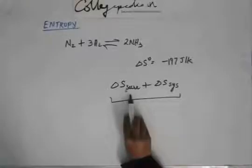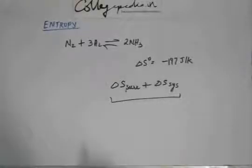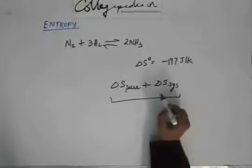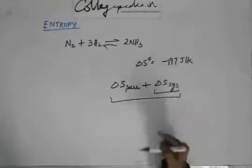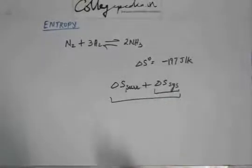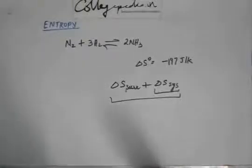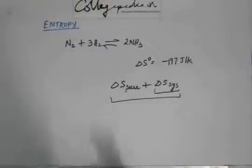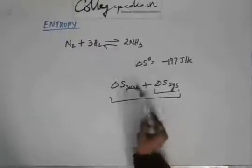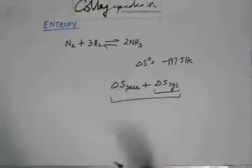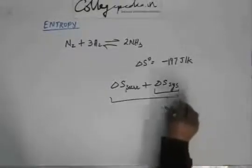Now, we have to calculate delta S of surroundings plus delta S of system. Delta S of the system we have calculated from the given data. But for delta S of the surroundings, you will not be given any data. Delta S of surroundings is not easy to calculate because the surroundings are large — we cannot easily calculate the change in entropy of the surroundings. So we have to find some other way of calculating delta S of the surroundings.